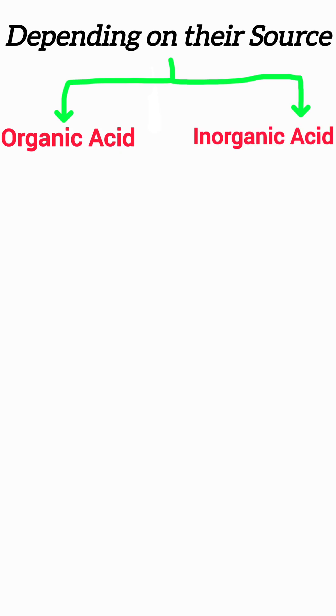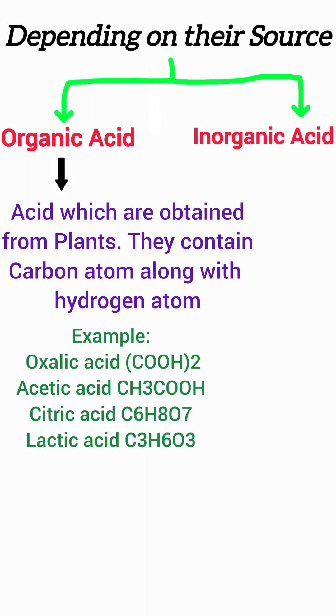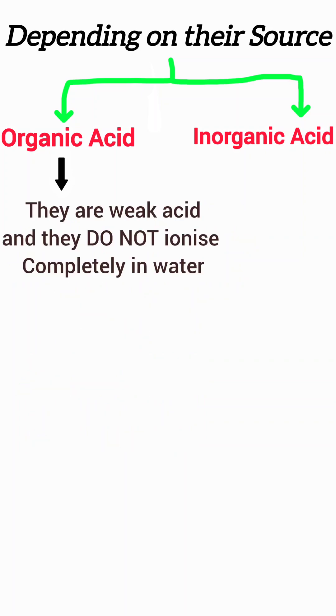Organic acid and inorganic acid. Organic acids are acids obtained from plants. They contain carbon atoms along with hydrogen atoms. For example, oxalic acid, acetic acid, citric acid, lactic acid, and many more. They are weak acids and do not ionize completely in solution.